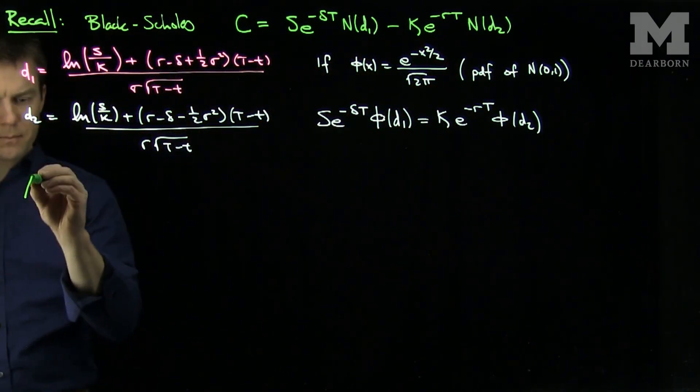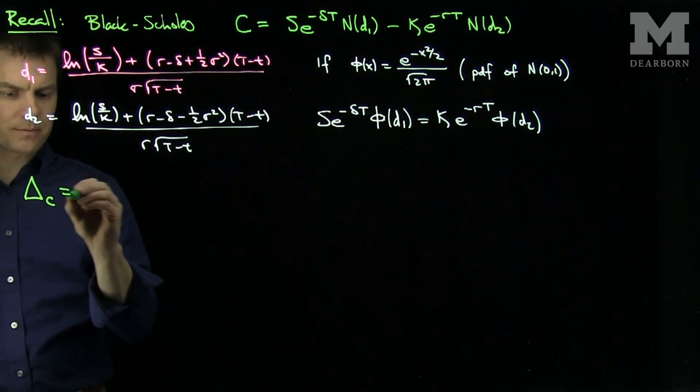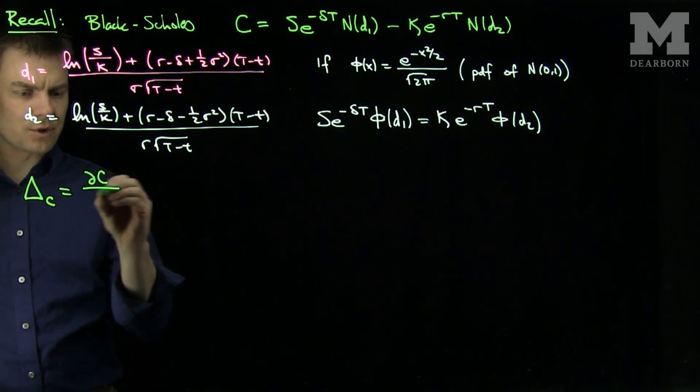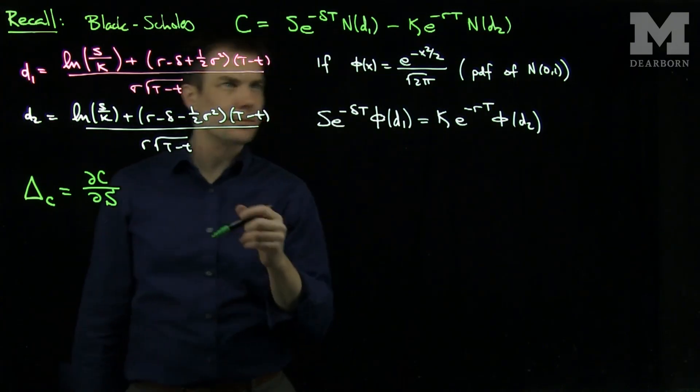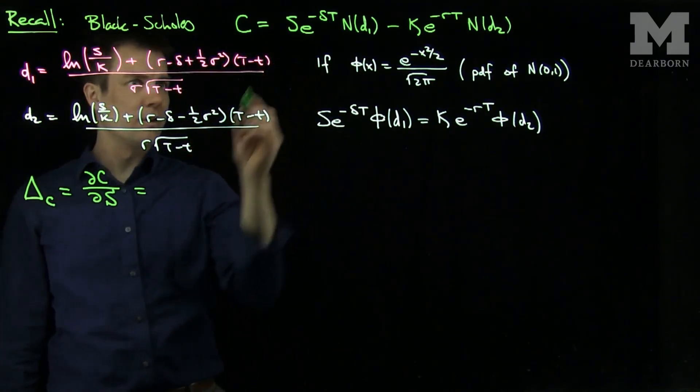So recall that the delta of the call option is the derivative of the call option with respect to the price s. So we can do it over here.